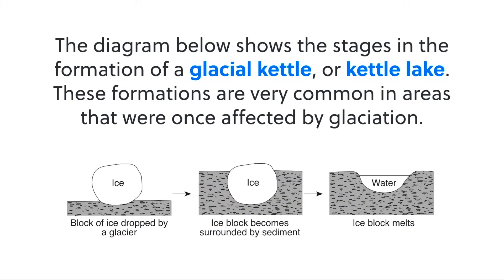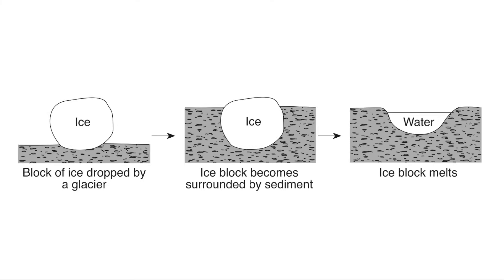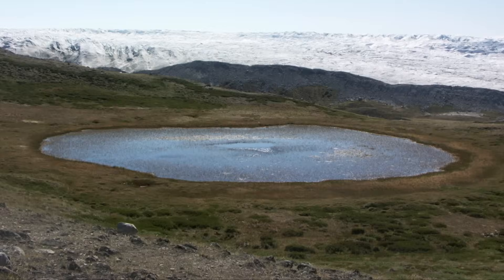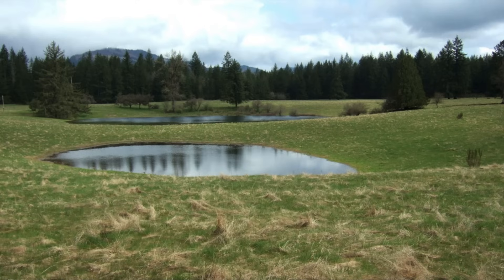This diagram shows us the stages in the formation of what's called a kettle or a kettle lake, and this is very common in areas where you've had glaciers. Large pieces of ice break off from the glacier, then that ice gets buried by sediment and eventually melts, leaving behind a hole in the ground known as a kettle. If it fills with meltwater, it'll be a kettle lake, as seen here.